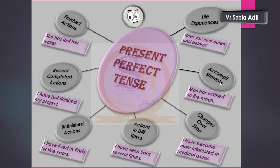Sixth, you can use the present perfect tense for accomplishments, for example: 'Man has walked on the moon.' Seventh, you can use this tense for life experiences — to share with others about your life experiences, for example: 'Have you ever eaten sushi before?' So the present perfect tense can be used in different types of situations and for different types of actions in life.